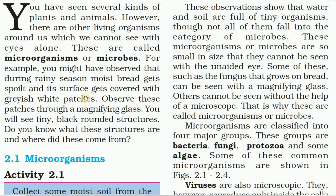Some microorganisms live in a unicellular, independent way, but some create their colony. Like amoeba - amoeba lives as a unicellular organism with no colony, living independently. But some fungi and some algae create their own colony.